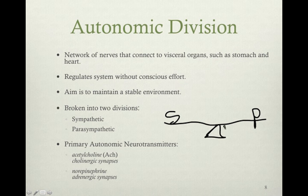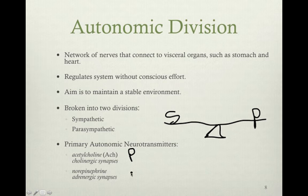The primary autonomic neurotransmitters, released at synapses, are acetylcholine and norepinephrine. Acetylcholine is primarily associated with cholinergic synapses, or the parasympathetic nervous system. Norepinephrine is associated with adrenergic synapses, or the sympathetic nervous system neurotransmitter.